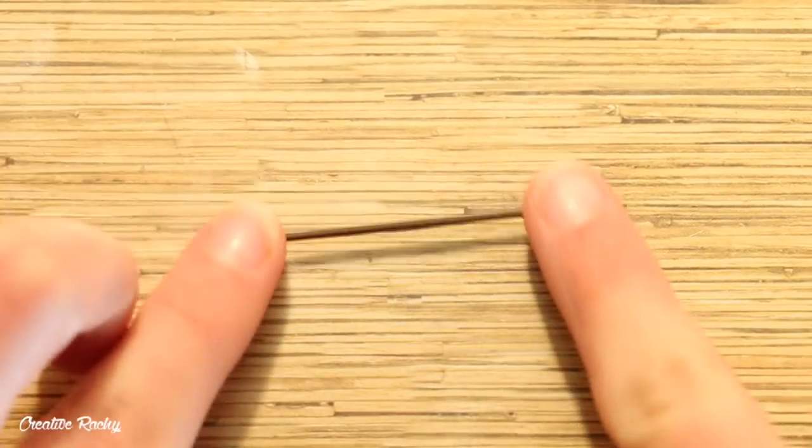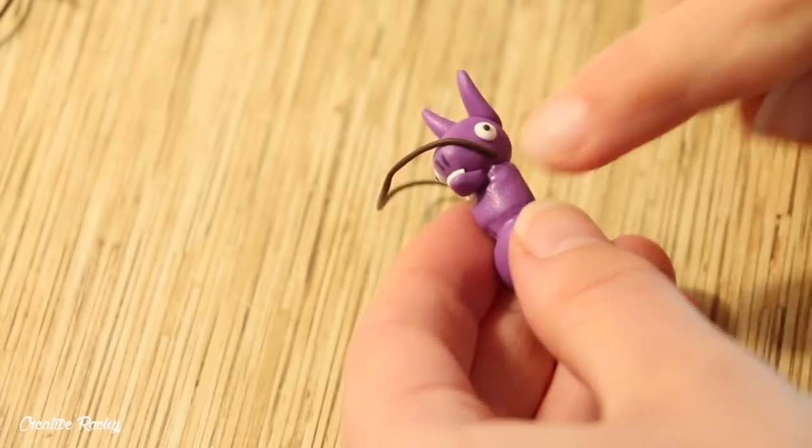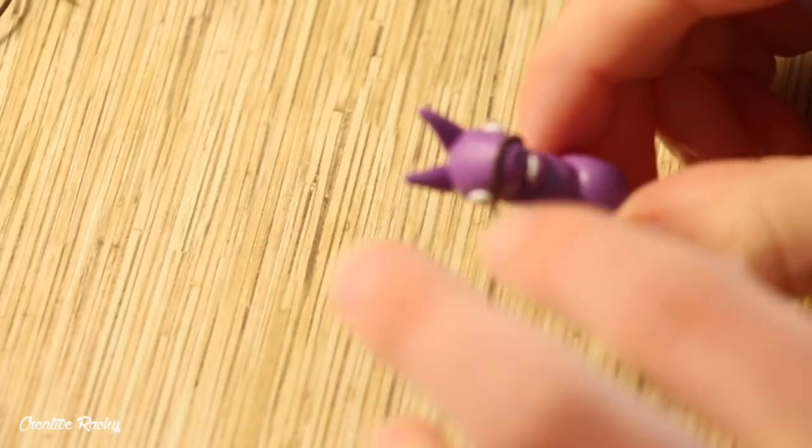To make the bridle take some dark brown clay and roll it into a thin coil. Then add a section over the nose and then also one around the back of the head.